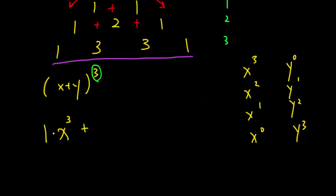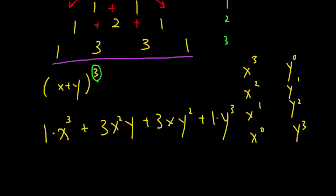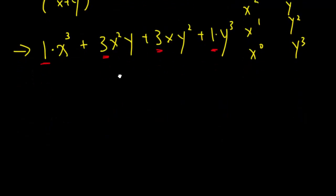Continuing: one times x cubed, plus three times x squared times y, plus three times x times y squared, and then plus one times y cubed. So this is the answer. You see how easy it is! These are the coefficients from Pascal's Triangle. Let's do another example.